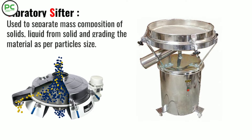Vibratory sifter is used to measure the mass composition of solids, separate liquid from solid, and grade materials as per particle size. Generally it is used to remove foreign particles, and this process is called sifting.